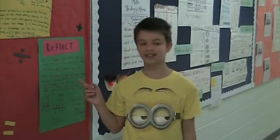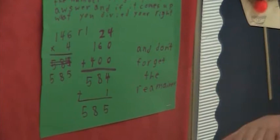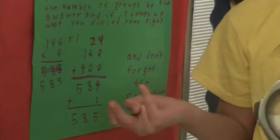Since I suck at division, this is one of the ones I use often. First, you add the number of groups, and then you times it by what your answer was. If it comes out what you were dividing, you're correct.